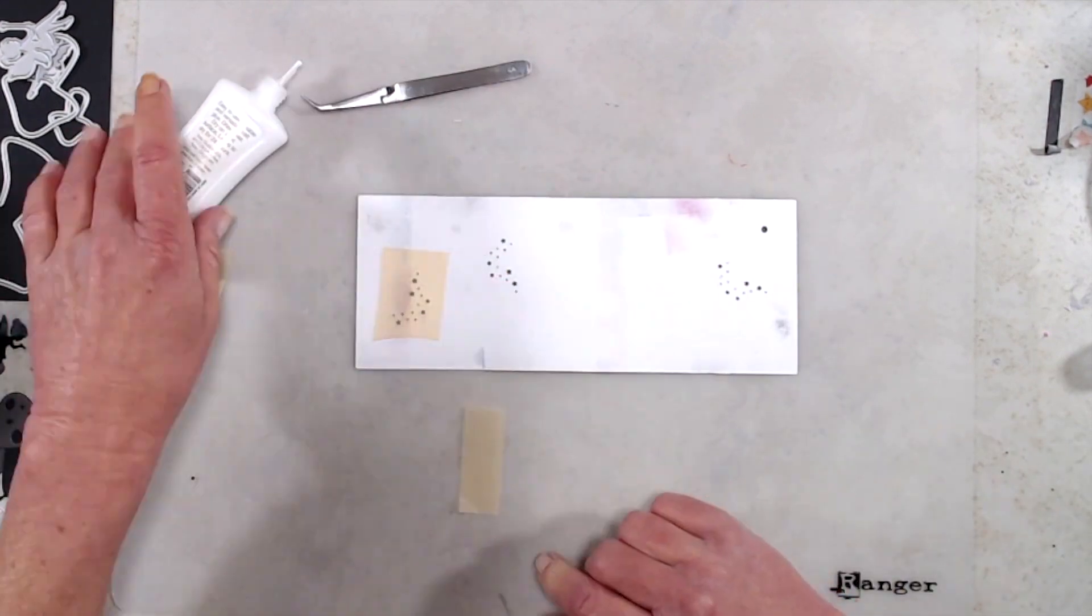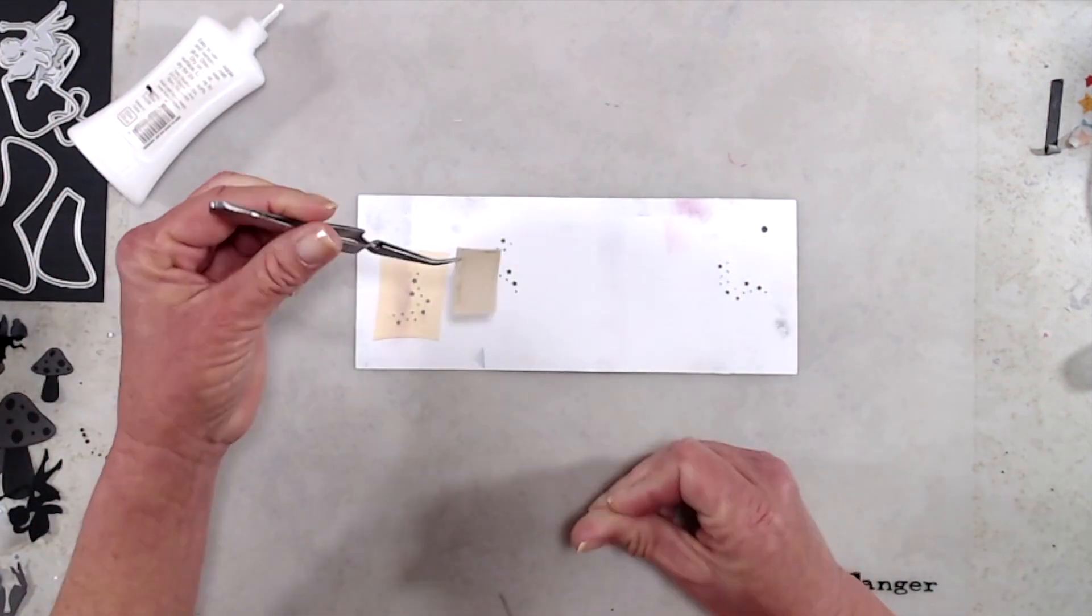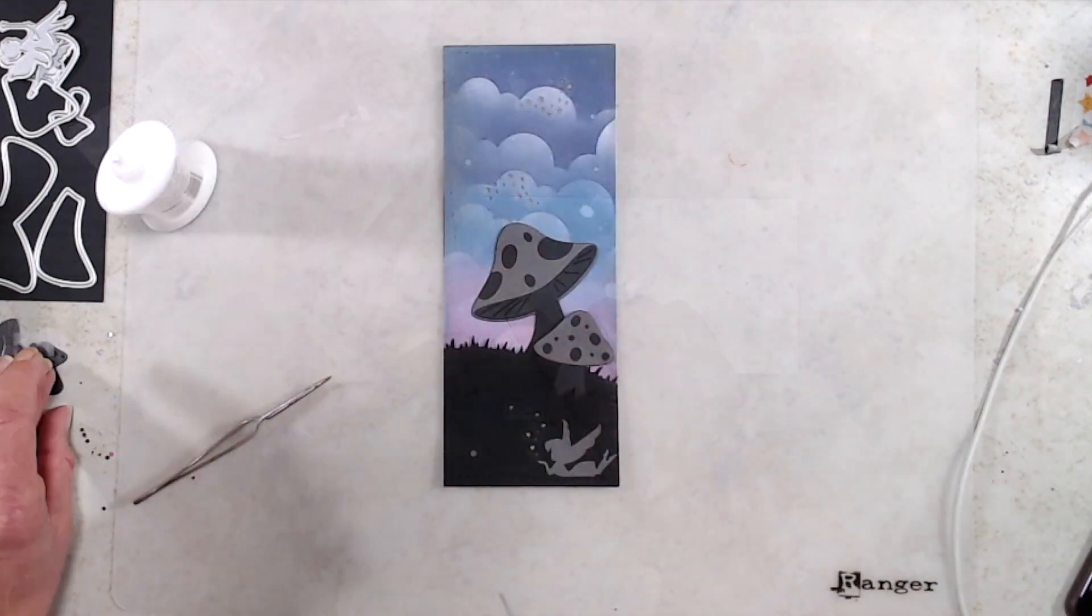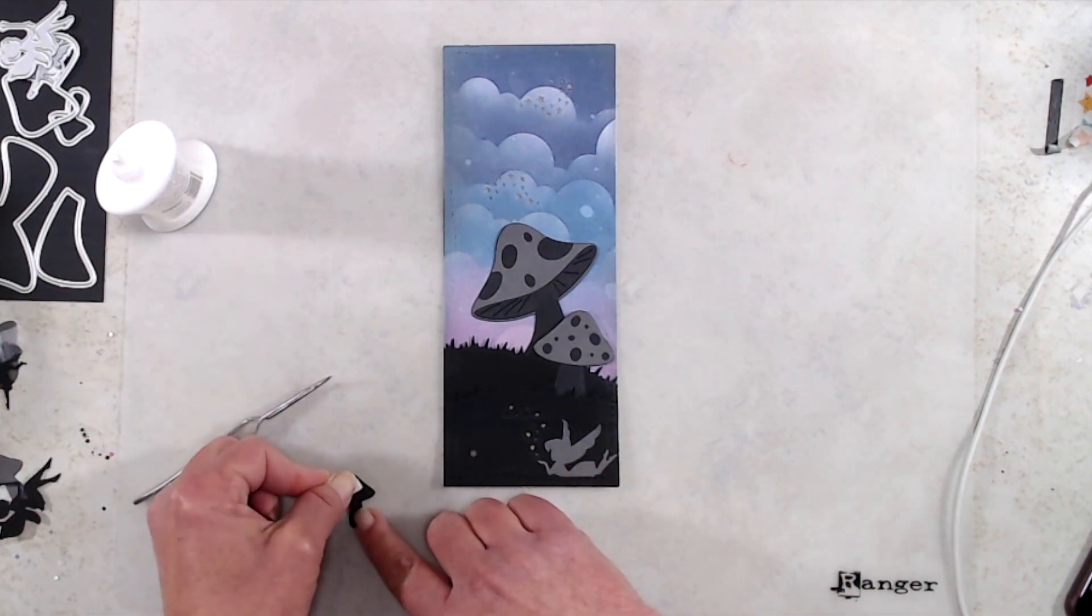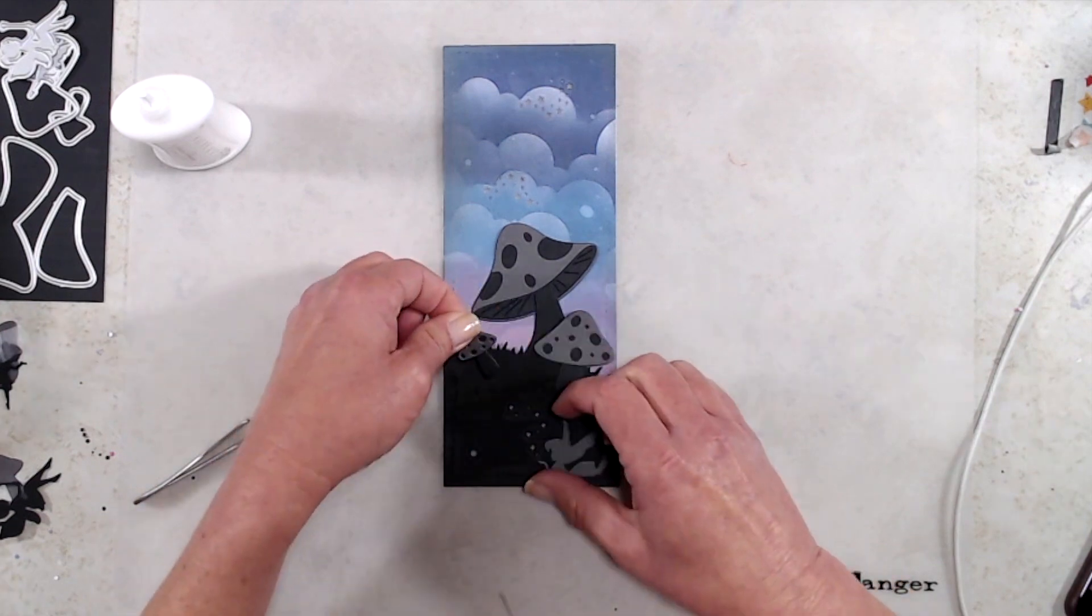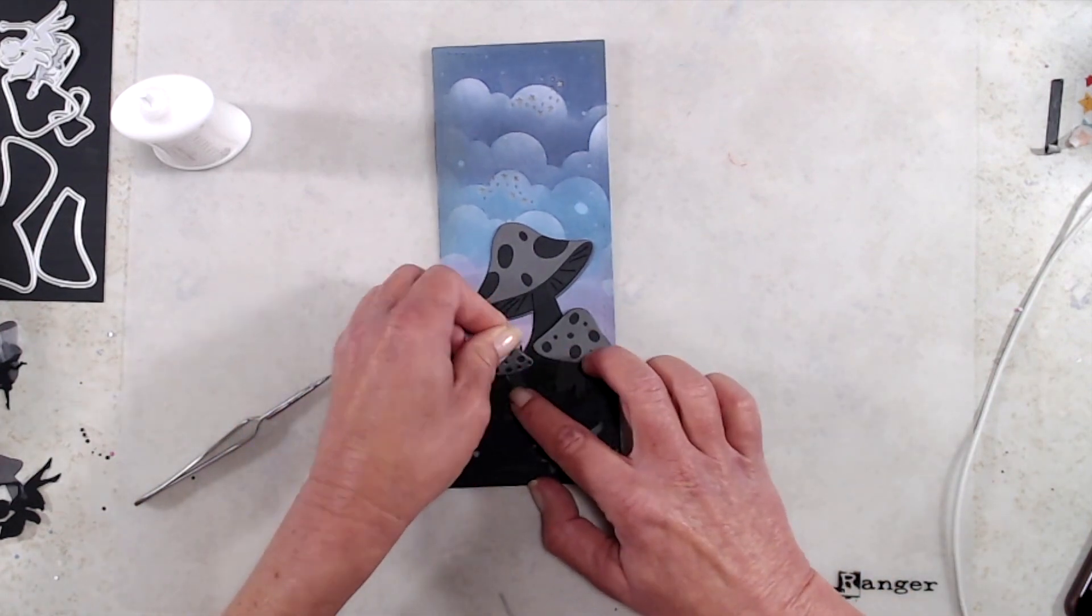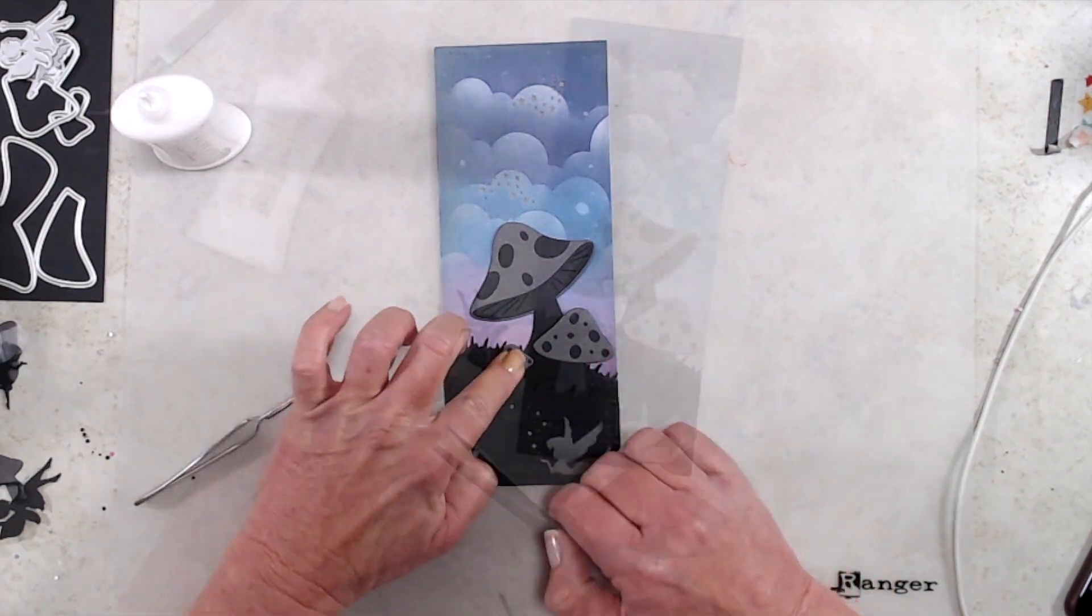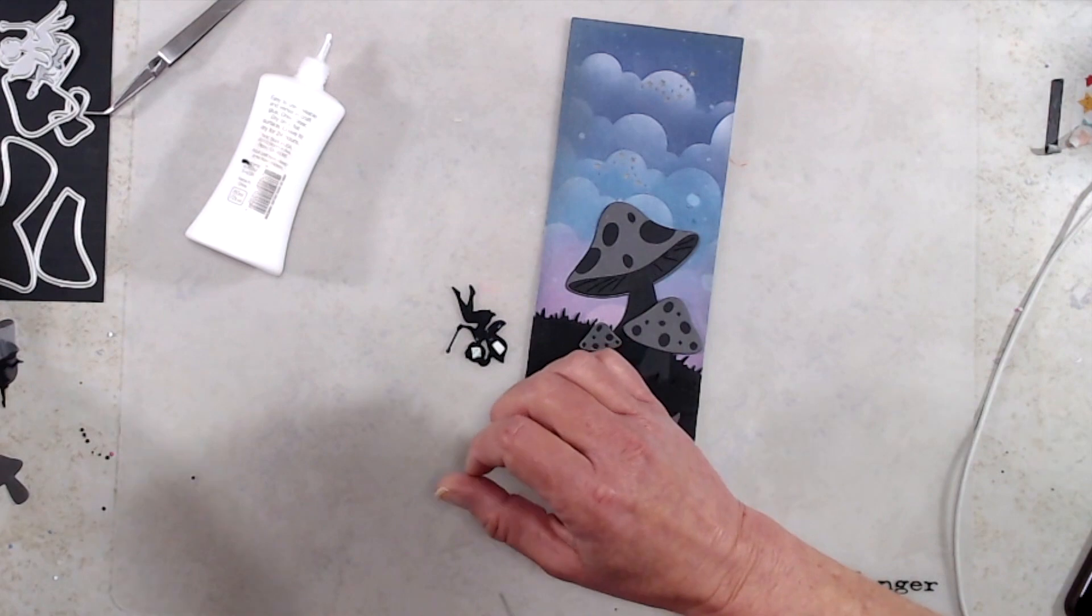So after I had the vellum adhered on the back it was time to start putting all of the elements together on the front of the card. I used liquid glue to adhere all of the elements to the front of my card. I did put some foam tape behind the mushroom caps on the medium and small mushroom as well as the fairy who is sitting on the large mushroom just to make sure that they were flush. After I had all of the elements adhered to the front of the card it was time to get my Easy Light mechanism on the back of my card.